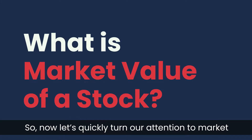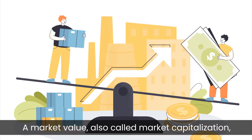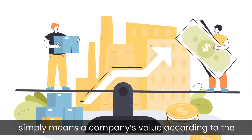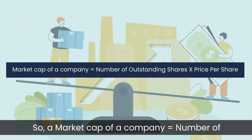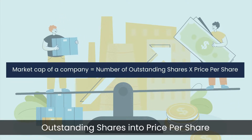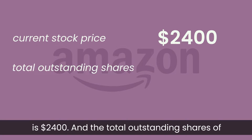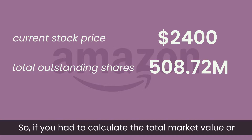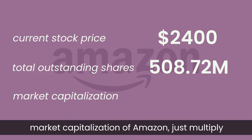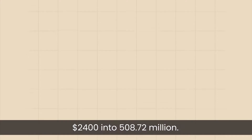Now let's quickly turn our attention to market value of a stock. Market value, also called market capitalization, simply means a company's value according to the stock market. A market cap of a company is equal to number of outstanding shares multiplied by the price per share. For example, the current stock price of Amazon is $2,400 and the total outstanding shares of Amazon stands at 508.72 million. So to calculate the total market value or market capitalization of Amazon, just multiply $2,400 by 508.72 million.